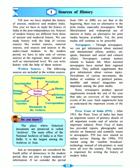In the modern period, we have to take note of various sources at regional, state, national, as well as international levels. We can write history with the help of these sources. So in the modern period, if we keep track of all of these things at the regional, state, and national level, all of these sources can help us to write history.